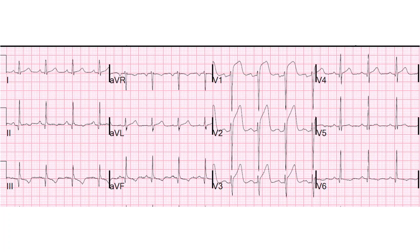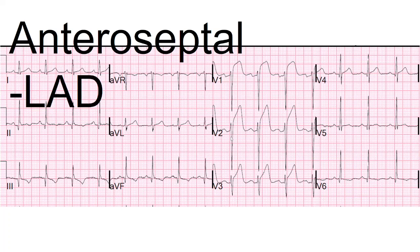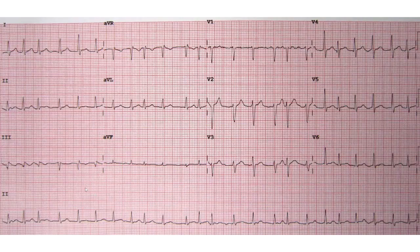This is an anteroseptal MI. Septal-anterior for V1, V2, V3 — we can see considerable ST segment elevation in all three. One noteworthy part of this EKG is the T-wave inversion in lead three and AVF, indicating ischemia in the inferior wall. This is absolutely not out of the question because all three major coronary arteries do terminate in the inferior wall. If we have a blockage and injury in the anterior region, it's certainly credible to see ischemia in the inferior wall, since the other vessels don't cover identical anatomy.